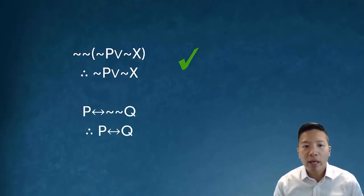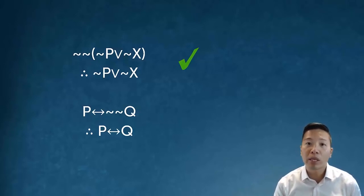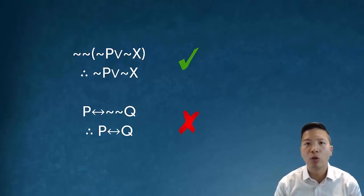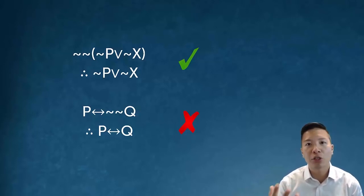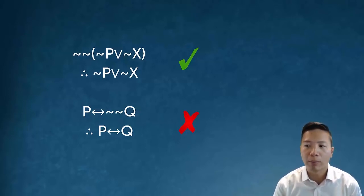How about: p biconditional negation negation q — can't I just infer p biconditional q? Again, it turns out I cannot. The reason why is the double negation rule, literally speaking, says that I have to have my negations in front. I can only do double negation if my sentence starts with two negations like in the top example.